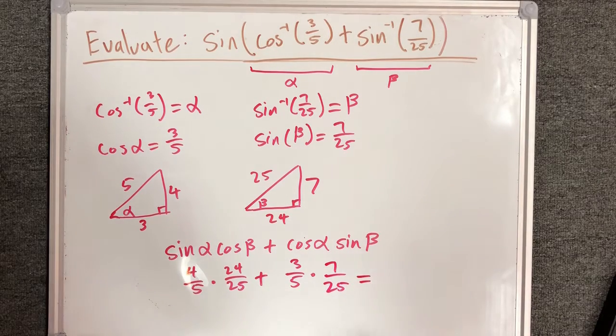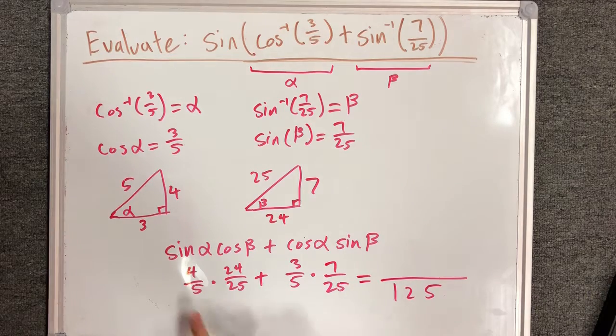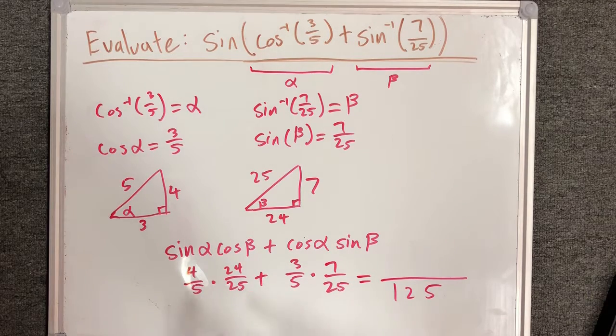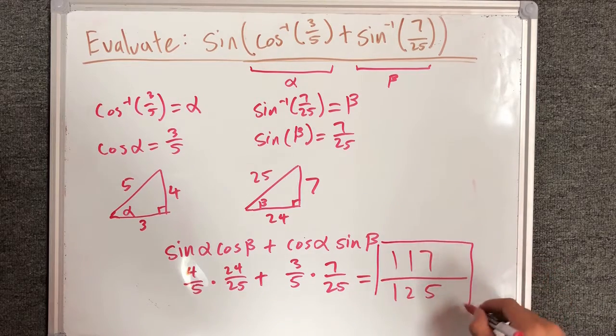Evaluate everything here. The denominator will be 125. 4 times 24 is 96, 96 plus 21 is 117, and so this is our final answer.